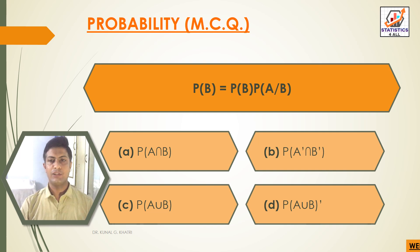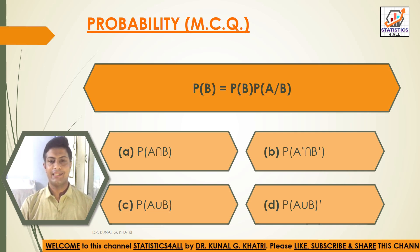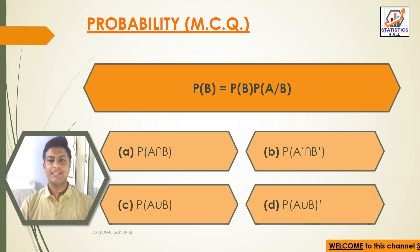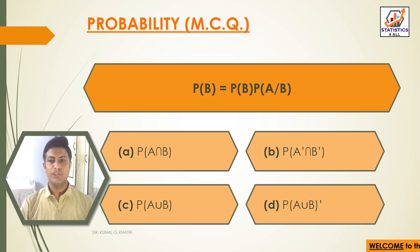Question 15: P(A∩B) is equal to P(B) · P(A|B). Options: Option A: P(A∩B). Option B: P(A'∩B'). Option C: P(A∪B). Option D: P(A∪B)'. Answer: Option A — P(A∩B) = P(B) · P(A|B).